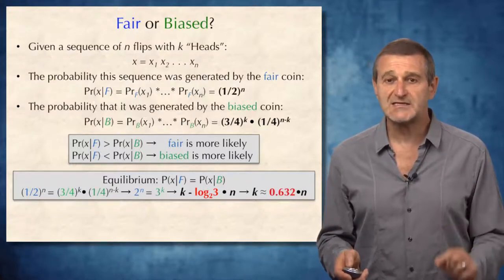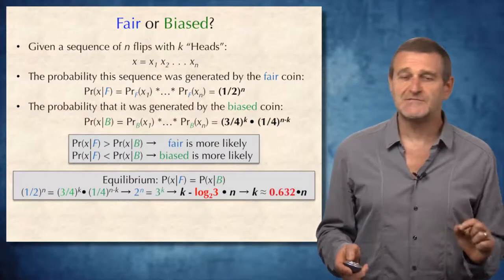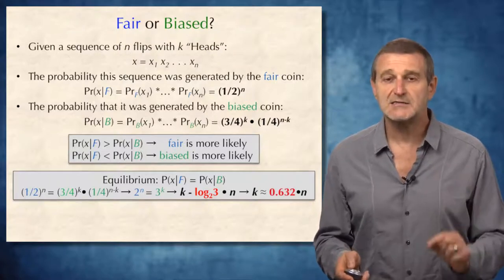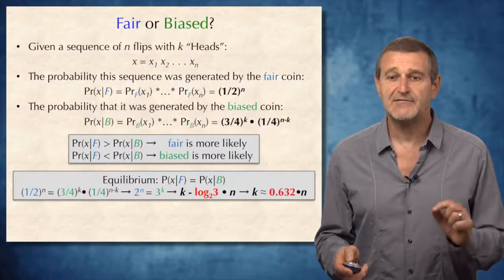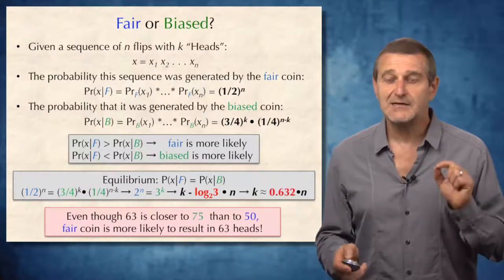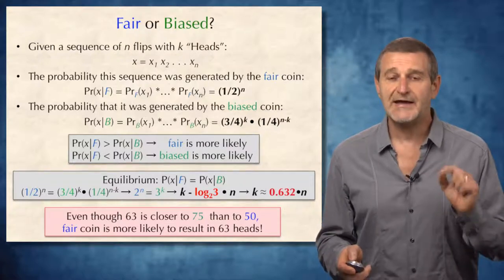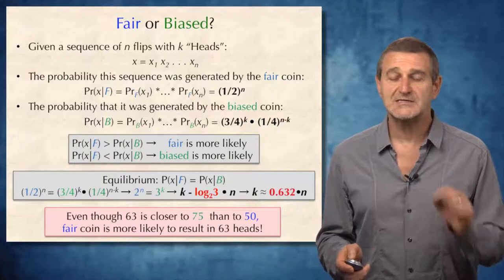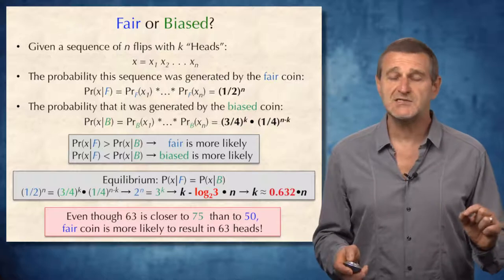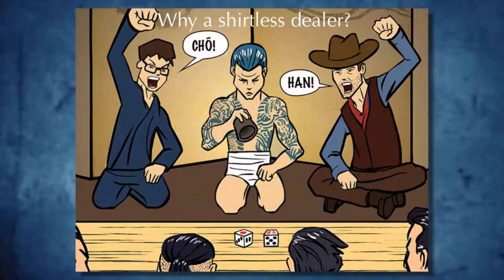This means that when the fraction of heads is smaller than 0.632, the dealer is more likely using the fair coin. Therefore, our original intuition was incorrect: if there are 63 heads in 100 coin tosses, the dealer was more likely using the fair coin — even though 63 is closer to 75 than to 50.